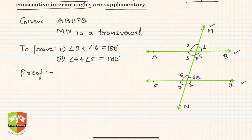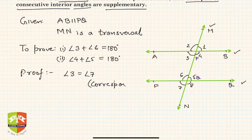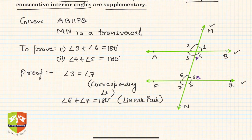Proof: Consider angle 3 plus angle 6. We know that angle 3 is equal to angle 7, because they are corresponding angles. Also, angle 6 plus angle 7 equals 180 degrees — if you look closely, these are a linear pair.